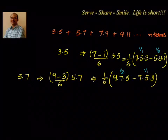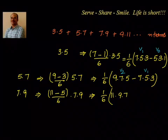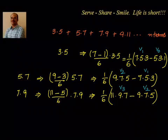Now for the term 7×9: after 9 comes 11, and before 7 comes 5. So 11 minus 5 divided by 6, multiplied by 7×9, equals 1/6 × (11×9×7 − 9×7×5). Here 11×9×7 is V3 and 9×7×5 is V2. So when I add these three terms, V1 cancels, V2 cancels. Like that when I go to N terms, all the middle terms cancel and only the Vn term and the V0 term are left out.